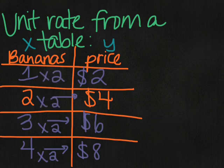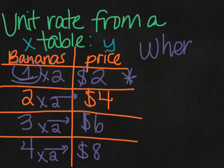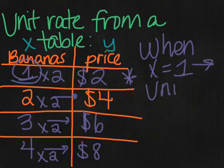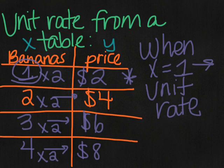I'm multiplying the number of bananas by two and I'm getting the price. The unit rate is that first value in the table, the first part of the table where you see the unit, the bananas, as one, and it gives you the y. When x equals one, you have your unit rate. That part of the table where x equals one is where you're going to find the unit rate.